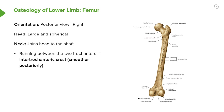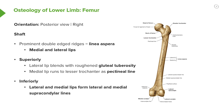If we look at the posterior view of the femur, we can still see we've got our head, our neck, and we can see we've got a greater trochanter and clearly a lesser trochanter. Here we can see we now have an intertrochanteric crest rather than that line.